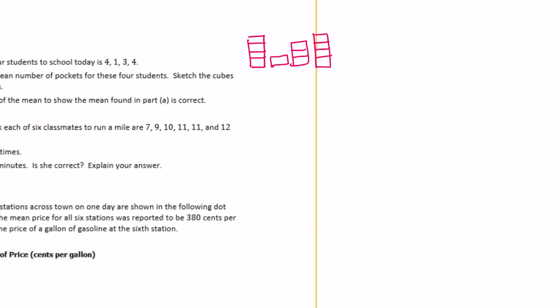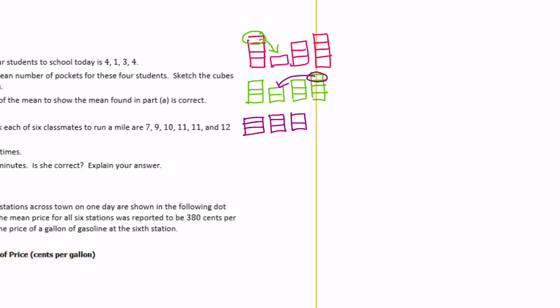Starting by sharing a cube from the largest pile, we now have three, two, three, and four. Then taking from the four and adding it over, that gives us three, three, three, and then taking one off the remaining four gives us three. So after the fair share process, we get three in each set.